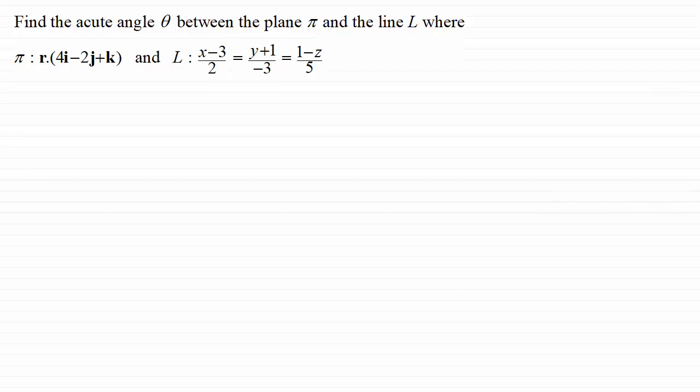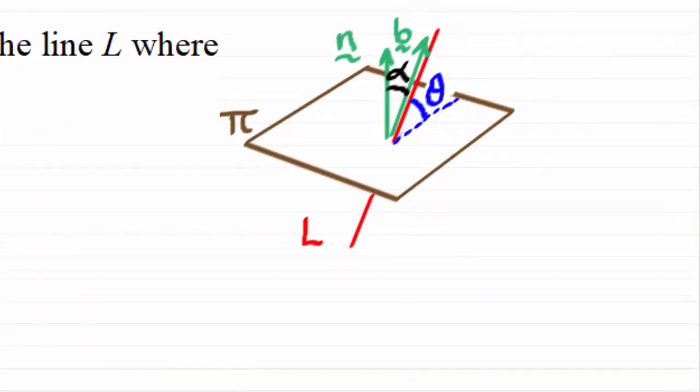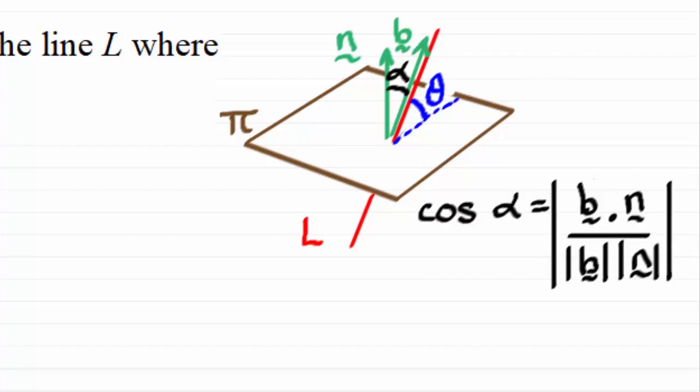So just very quickly going back to the previous video, I showed you that if you had a line L intersecting a plane π and we wanted to find the acute angle theta, then we first found out the acute angle alpha, say, between the normal to the plane n and the vector b, a vector parallel to the line L. And I showed you that we could use the formula, the dot product formula, when it's rearranged to find out the cosine of angle alpha.